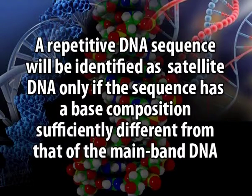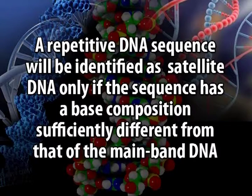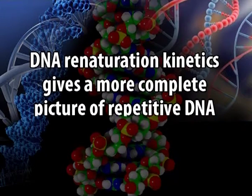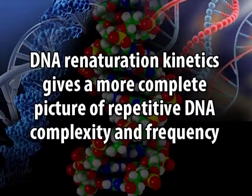A repetitive DNA sequence is identified as satellite DNA only if its base composition is sufficiently different from that of the main band DNA, so that it appears as a distinct band in the density gradient. Apart from these techniques, DNA renaturation kinetics gives a more complete picture of repetitive DNA complexity and frequency. The time required for re-association of particular DNA sequences is inversely proportional to the number of times that sequence is present in the genome — so highly repetitive DNA sequences will renature very rapidly, due to more possibilities of collisions between complementary strands.